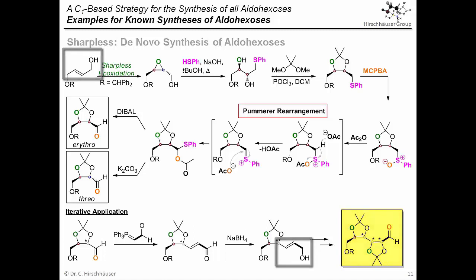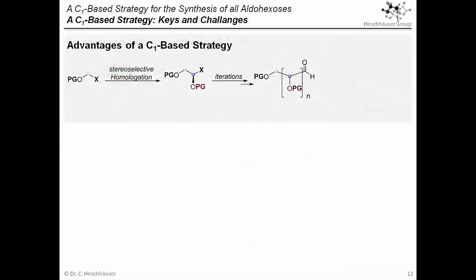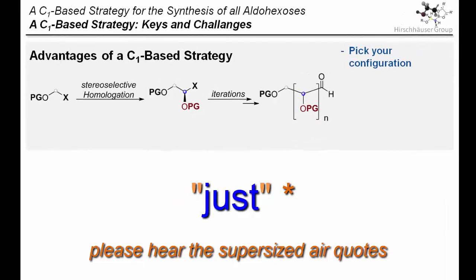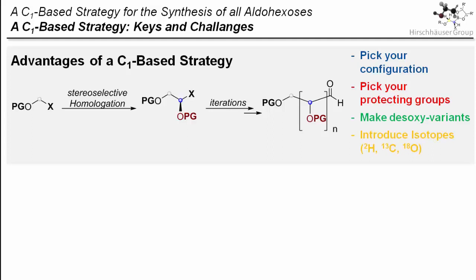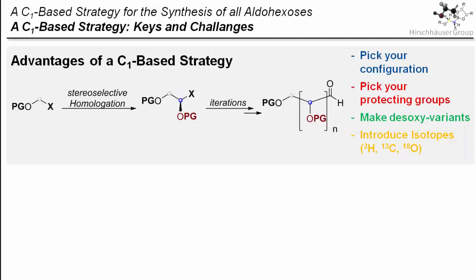So Sharpless and co-workers have established great control over all these stereocenters. However, when you imagine complete control over the system, you might want to look at a process that more or less assembles the carbohydrate scaffold atom by atom. That way, one wouldn't just be able to control the configuration of each stereocenter — one could also choose the protecting group, which would allow you to address specific oxygen atoms, and one would be able to introduce isotopes nearly at any position. This could be particularly useful in the development of molecular tools that allow for monitoring the fate of a carbohydrate within a biological system.